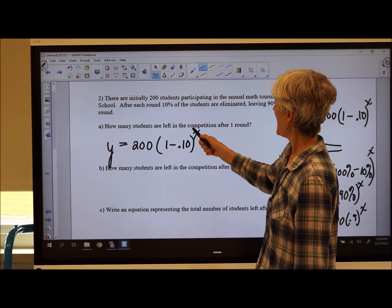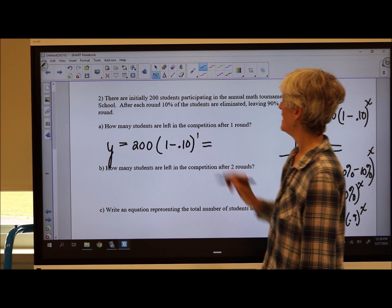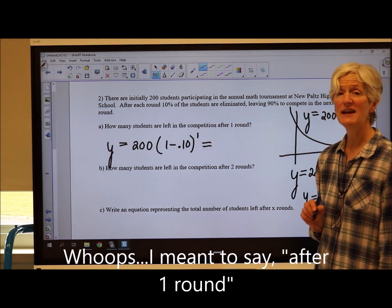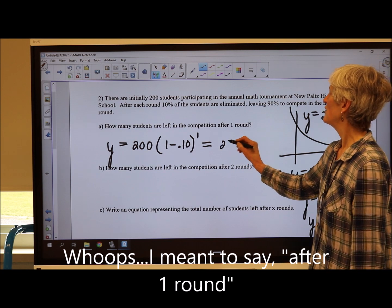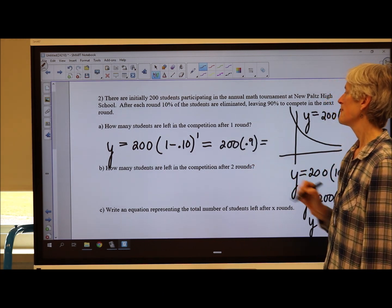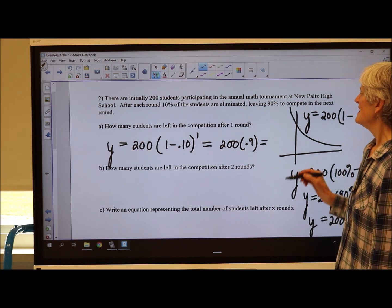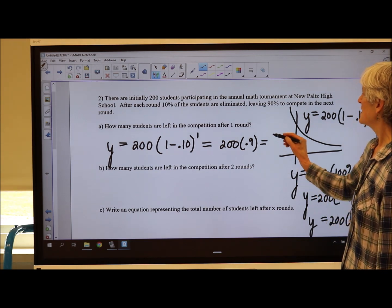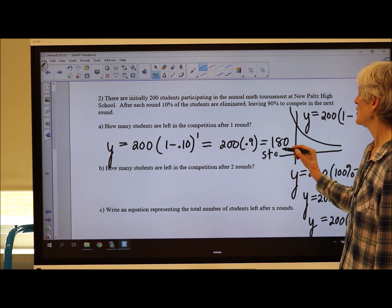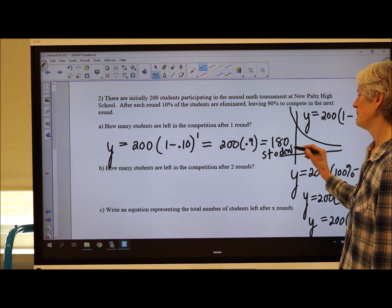Now that x is going to be after 1 round, and I'm going to be finding 200 times 0.9. I think that means I'm going to have 180 students left after 1 round.